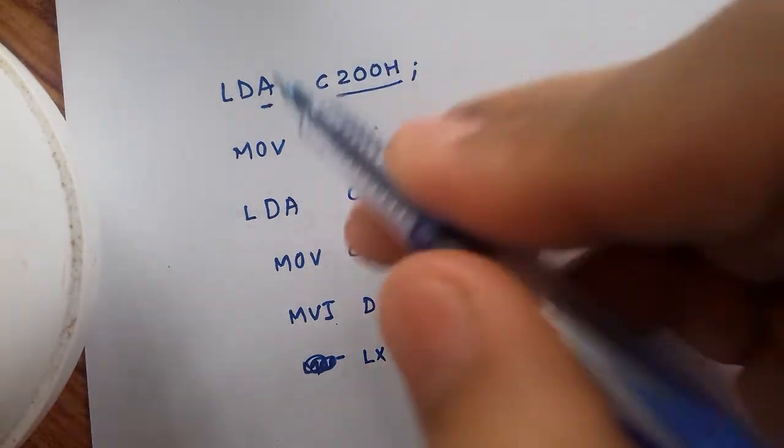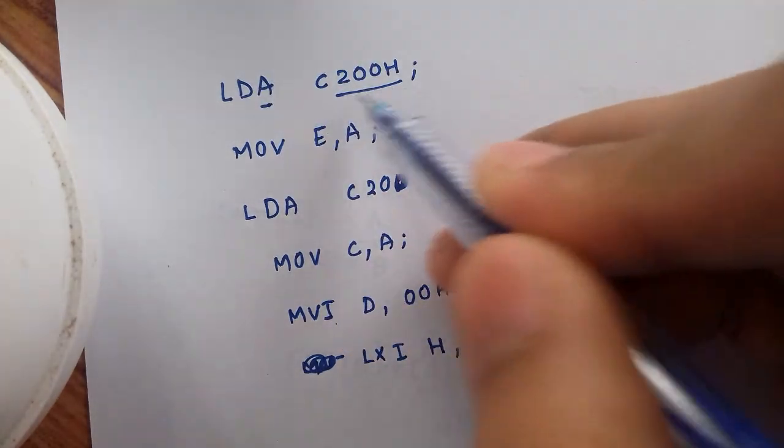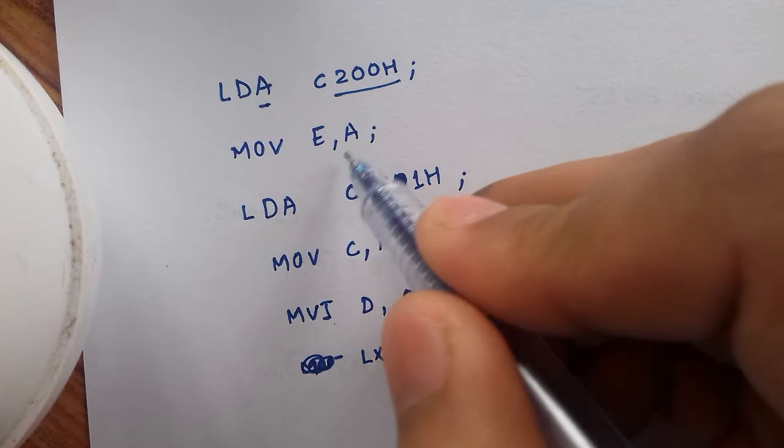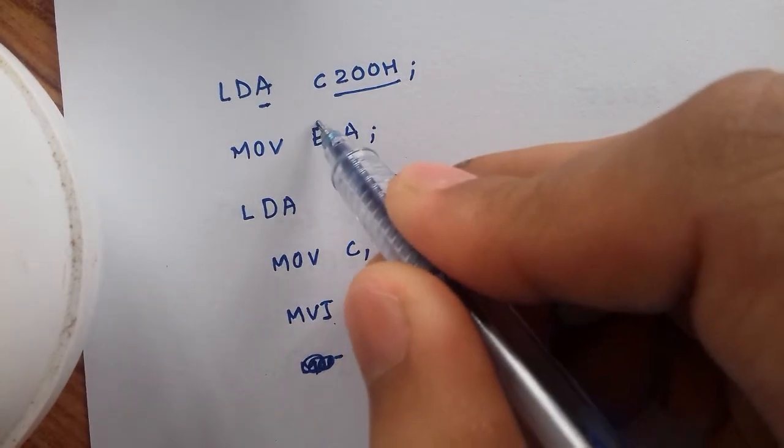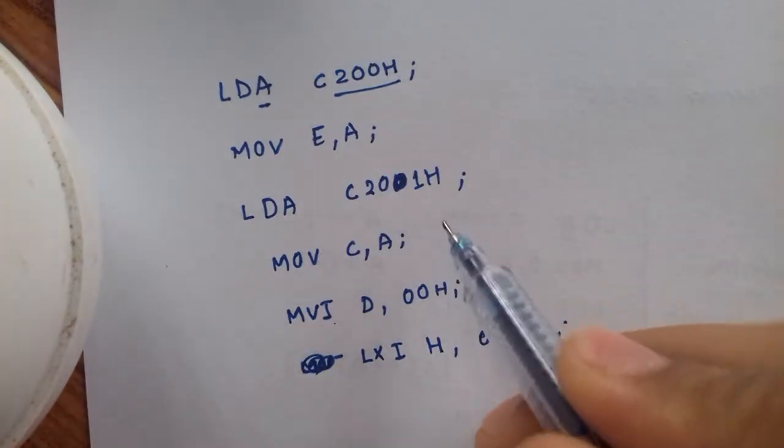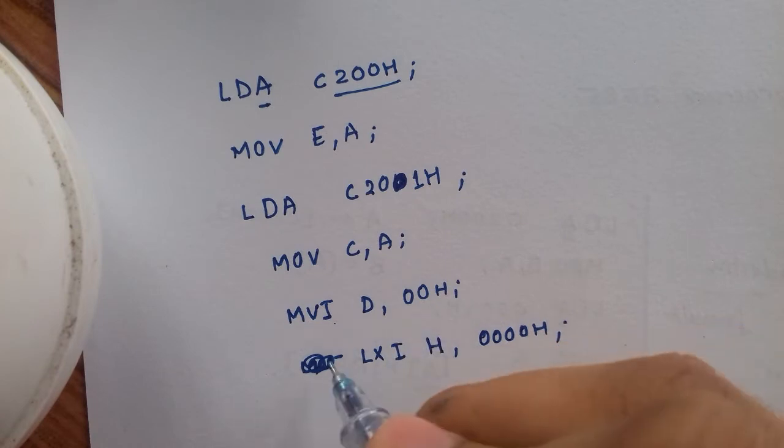So far, we have loaded the accumulator with the content from memory and transferred it to E register. In the next instructions, we have reset or cleared the D register and HL pair.